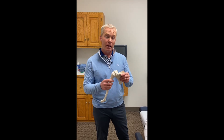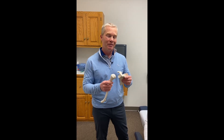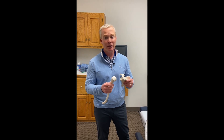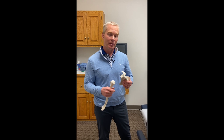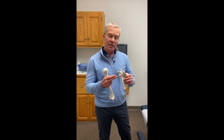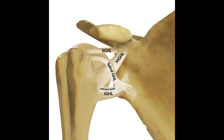Those two bones are held together by a capsule, which helps — but not a lot, because the capsule is not a good stabilizer and its ability to stabilize further decreases with age. We also have some ligaments, which are actually just thickenings of the capsule. As you can see on this image, we have the superior glenohumeral ligament, the middle glenohumeral ligament, and the inferior glenohumeral ligament with its anterior band, axillary pouch, and posterior band. And finally the spiral ligament.